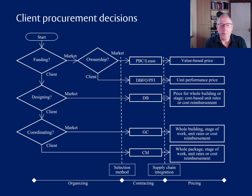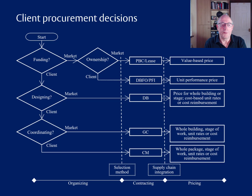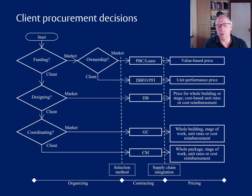If the client wants to fund the process from their own money, they have to ask: are we going to go to the market for the design? If the answer is yes, we'd be falling into a design-build project. If the answer is no — we want to take control of the design process as a client — then we ask what about coordination. If we want the market to take care of coordination, we'll be going into general contracting. If we want to coordinate it with our own person, we'd be going into construction management.